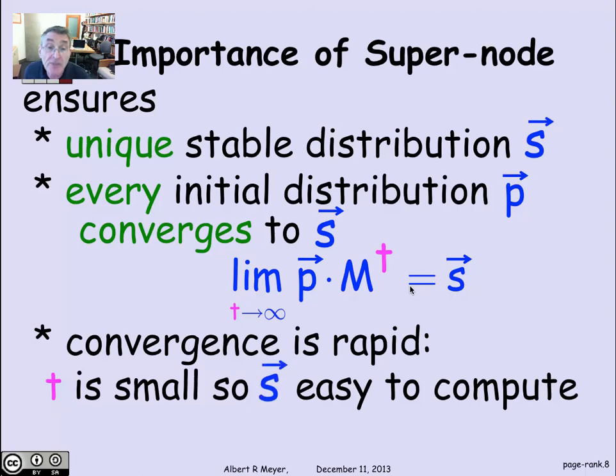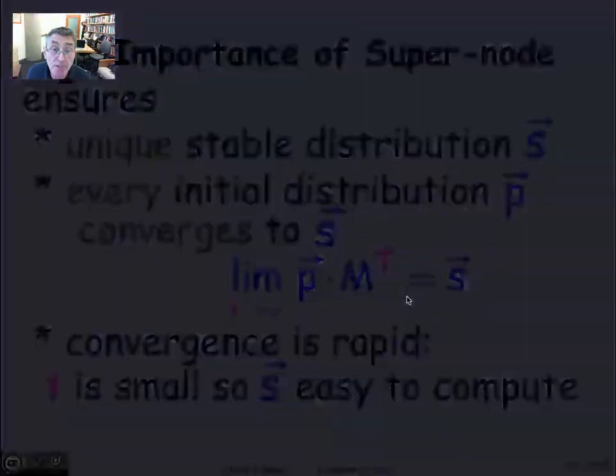As a matter of fact, the convergence is rapid. What that means is that you can actually calculate the stable distribution reasonably quickly, because you don't need a very large t in order to arrive at a very good approximation to the stable distribution.